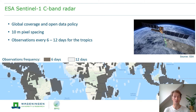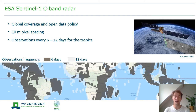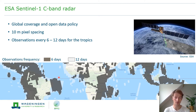We use the Sentinel-1 C-band radar data, which provides for the first time radar data at global coverage with an open data policy — making it a real game changer. It provides high spatial and temporal detail at 10-meter pixel spacing. For the tropics, images are available every 6 to 12 days. Six-day coverage (shown in dark gray) applies mainly to insular Southeast Asia, while much of the Congo Basin is covered every 12 days.